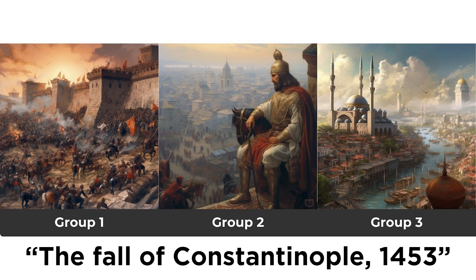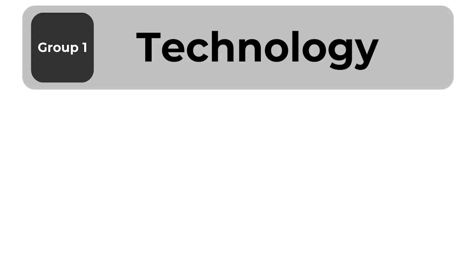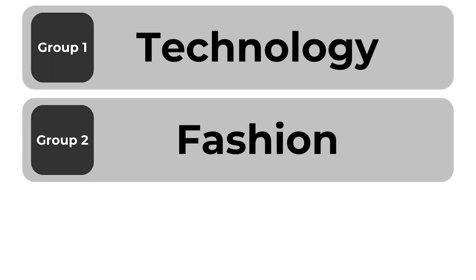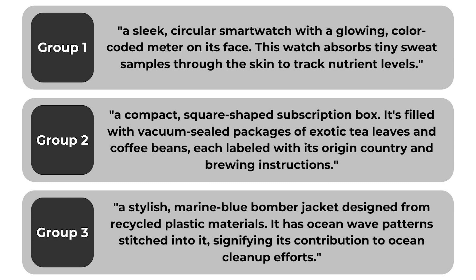When thinking of ways AI image generation can enhance your lectures, your imagination truly is the limit, and this applies to virtually any industry. Let's see yet another example, this time for business students. Imagine you want to create an activity to foster creative thinking and teamwork skills, understand market needs and trends, and apply marketing principles in a real-world context. You could divide your students into small teams, each of them acting as a startup company with a specific industry assigned to them, like technology, fashion, or food. Each team would then brainstorm and write a detailed description of an innovative product or service that they believe would be successful in their industry.